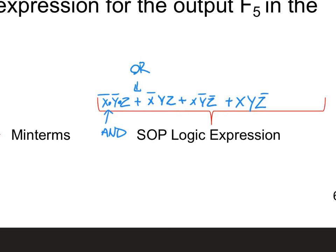That is my SOP logic expression. It tells the person reading it when that circuit will be on — it could be this scenario, or this scenario, or this scenario, or this one. In each one of those min terms it's an AND statement; for the last one, it has to be X AND Y AND NOT Z — that specific combination — in order for that circuit to output a one.